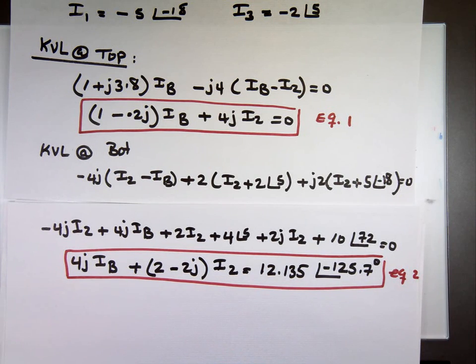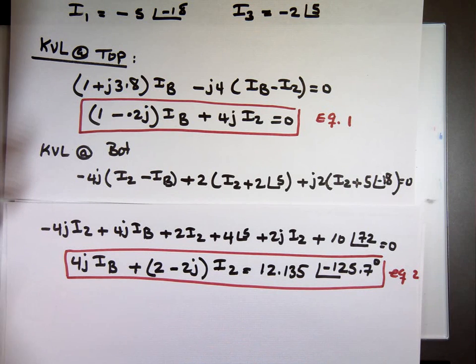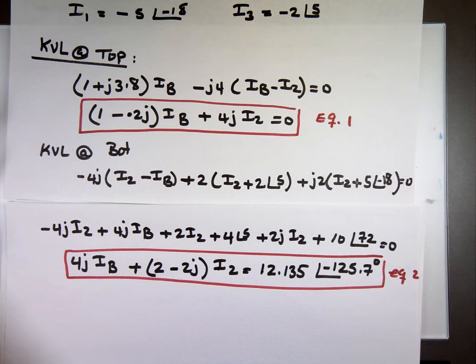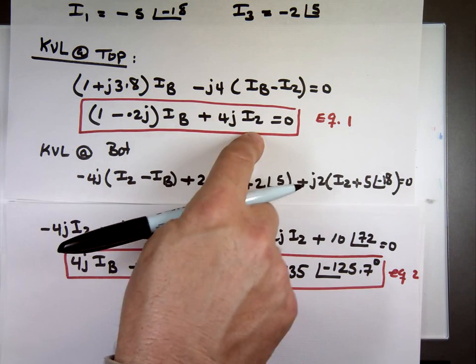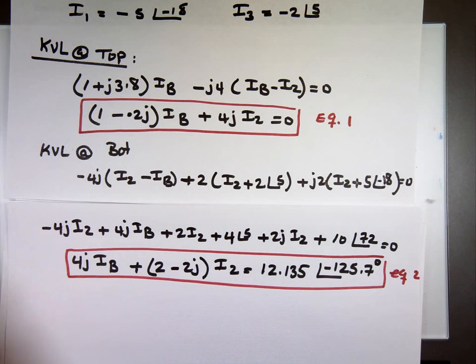I have two equations by two unknowns. The good news, as I said, about these calculators, you can mix and match modes and they'll know the answer. So simultaneous, here we go. Two equations. Coefficient of the first one, 1 minus 0.2. 1 comma negative 0.2. Next one, 0 comma 4. Equals what? Zero. Next one, 0 comma 4. Next one, 2 minus 2. And the answer here is 12.135 angle negative 125.7.